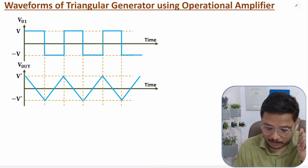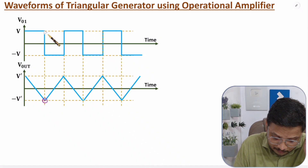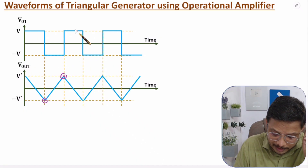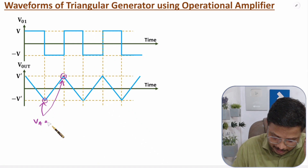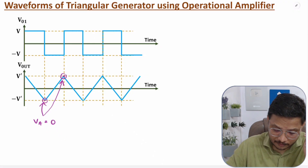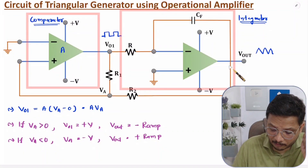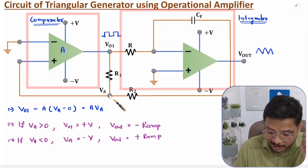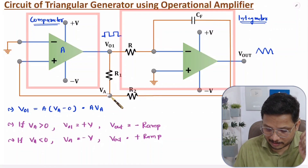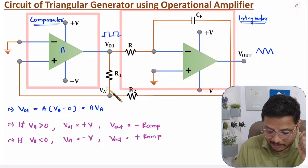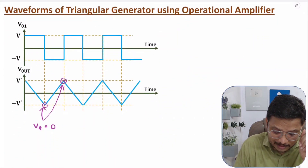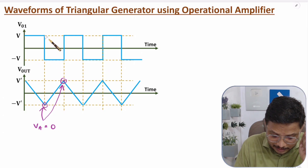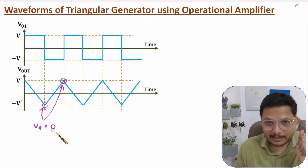A very essential thing to note: at the point of transition from plus V to minus V, and at the point of transition from minus V to plus V, if you calculate the value of VA at those locations, VA will be zero. This is because VA comes from feedback, and VA must pass through zero before it can become positive or negative. So just before each switching instant, VA equals zero, and that is what drives the square wave generation.